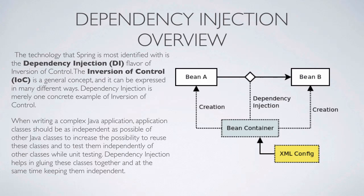We're not going to cover what dependency injection is on this slide — that's going to be the next slide. But we've understood that dependency injection is just one of the examples of inversion of control. So, what is inversion of control? When writing a complex Java application, application classes should be as independent as possible of other Java classes.